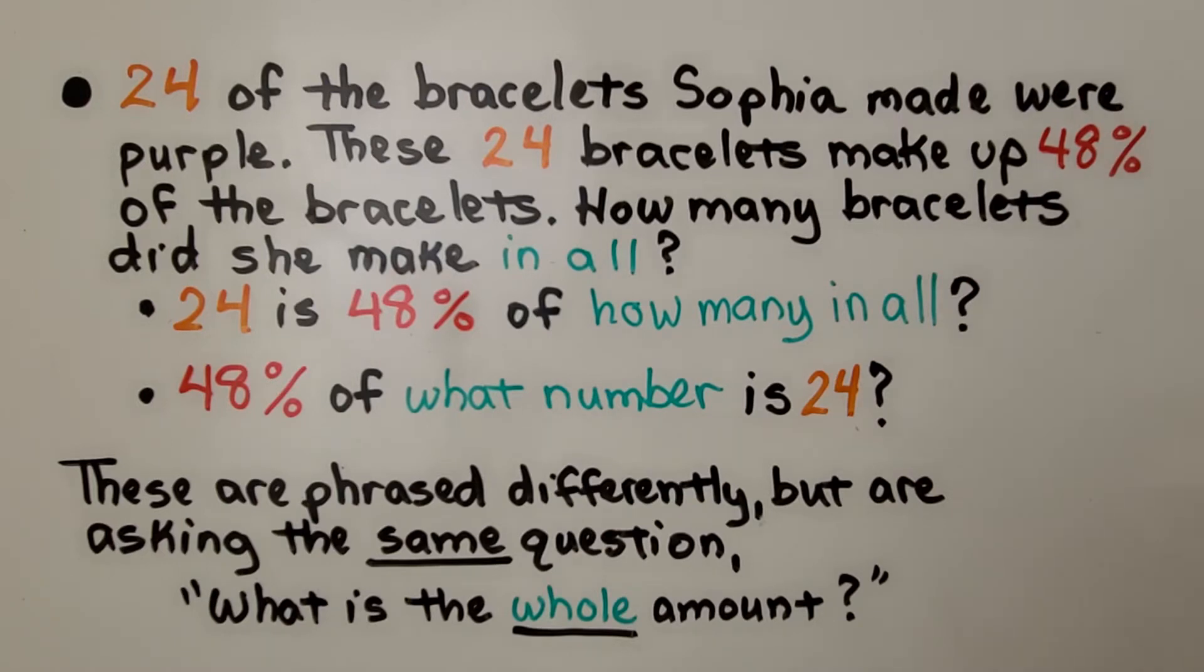24 of the bracelets Sophia made were purple. These 24 bracelets make up 48% of the bracelets. How many bracelets did she make in all? 24 is 48% of how many in all?